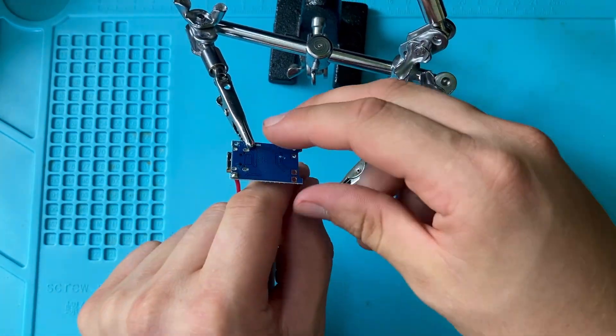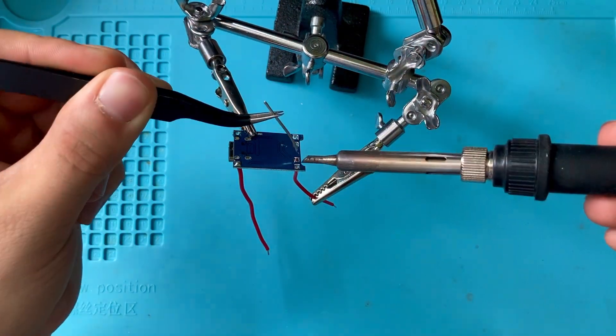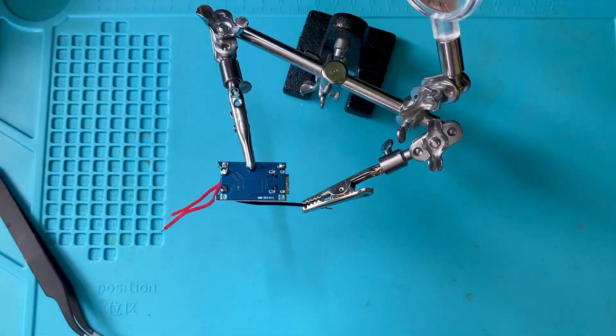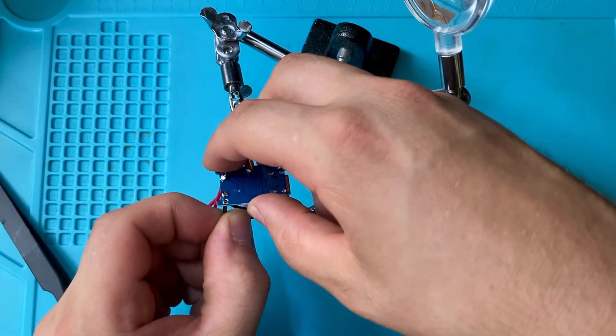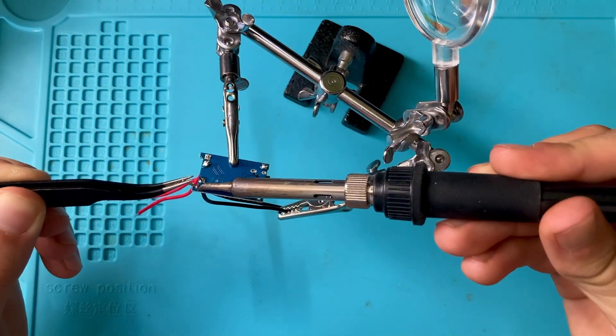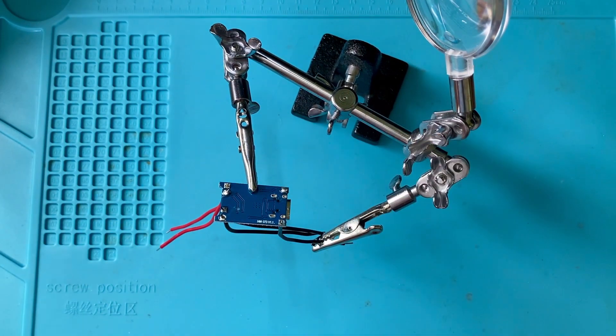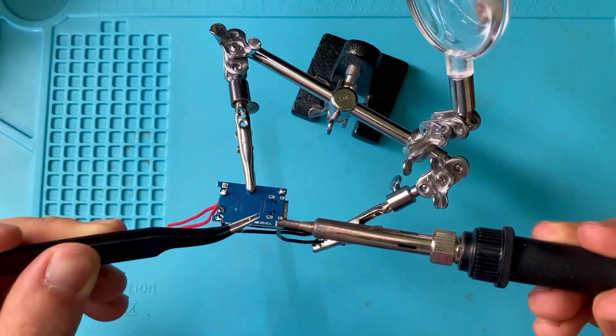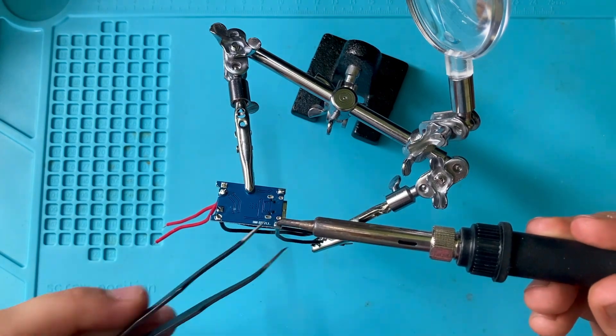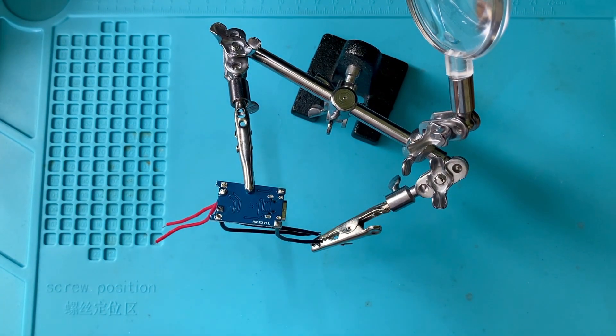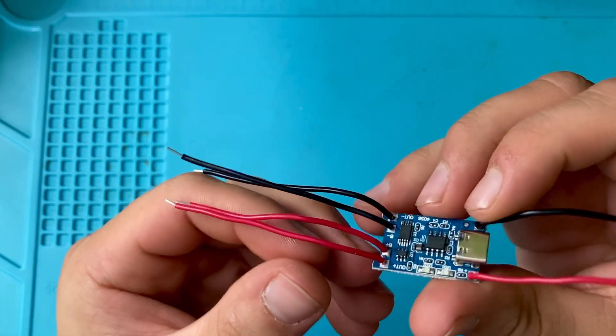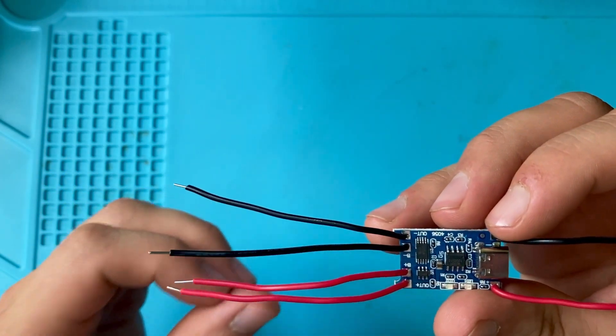Now we need to solder some wires to the TP4056 module. It's good practice to use red wires for the positive connections and black wires for the ground connections. The pins to the left and right of the USB-C connector are for an external power connection like our solar module. The outermost pins on the other side are for the power output. The pins labeled B plus and B minus need to be hooked up to the battery.